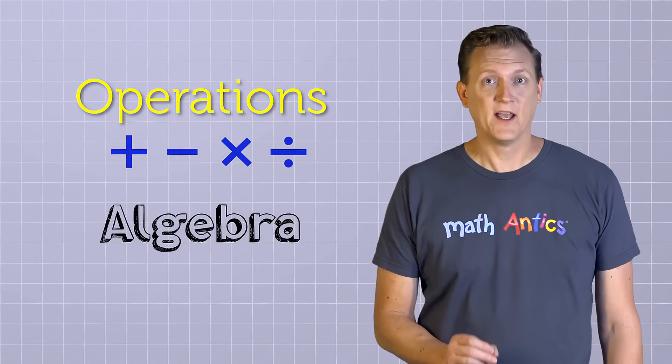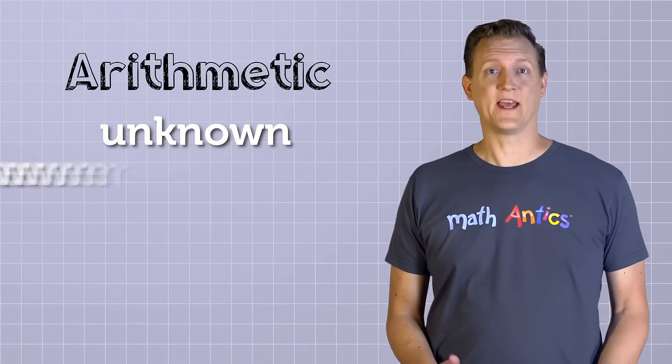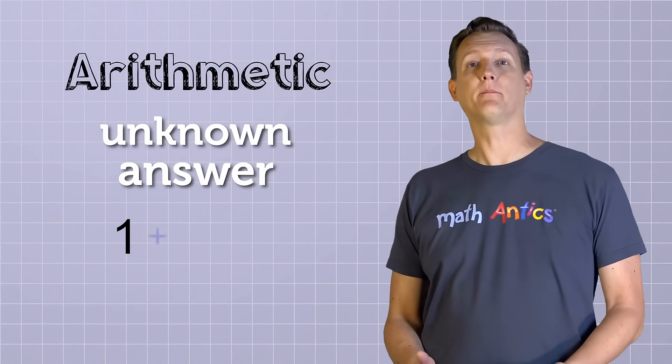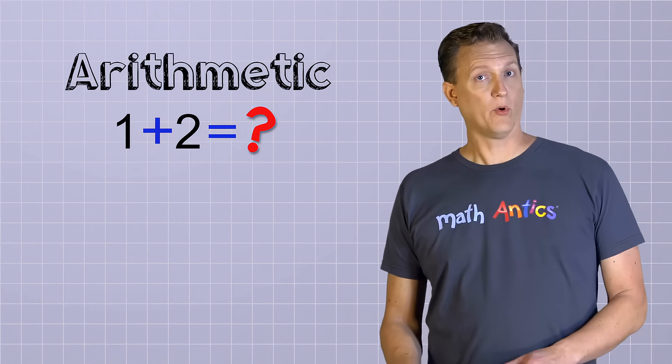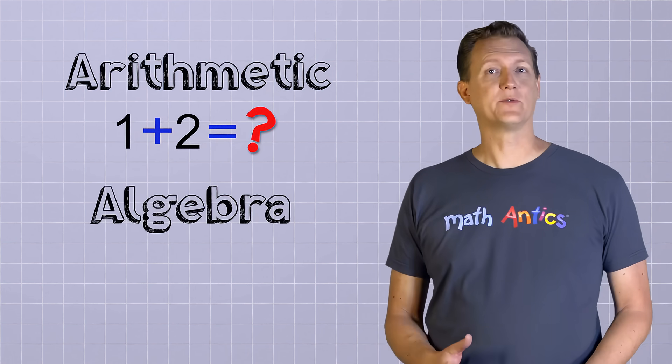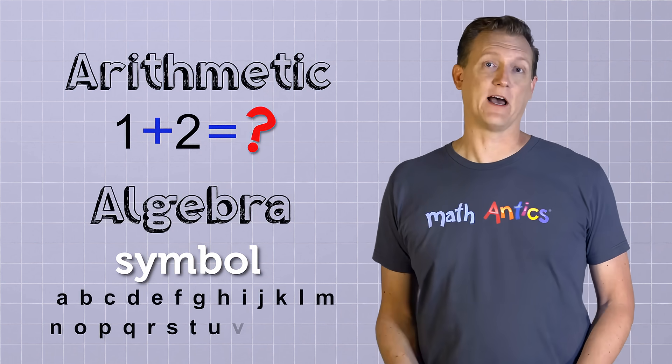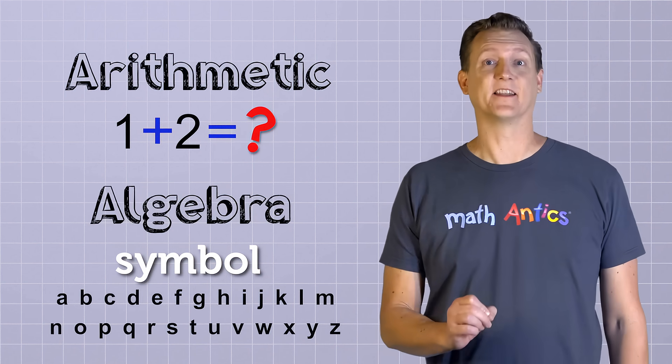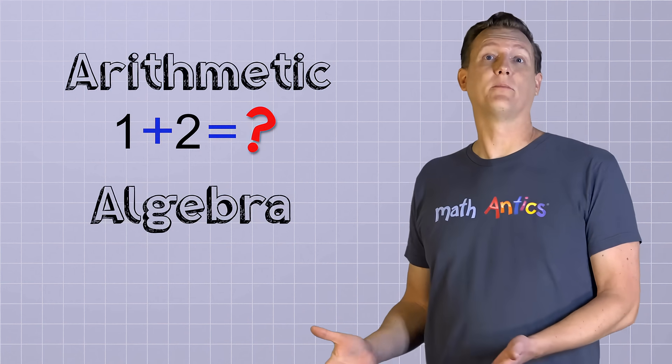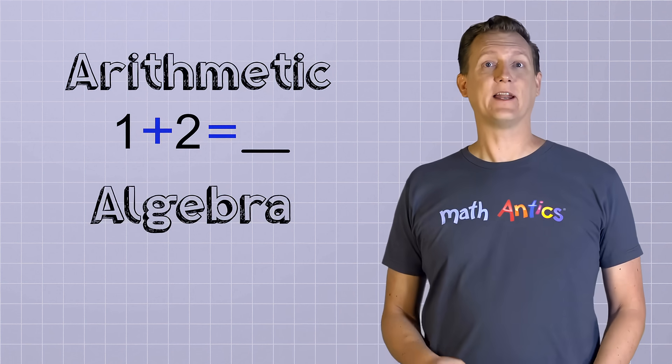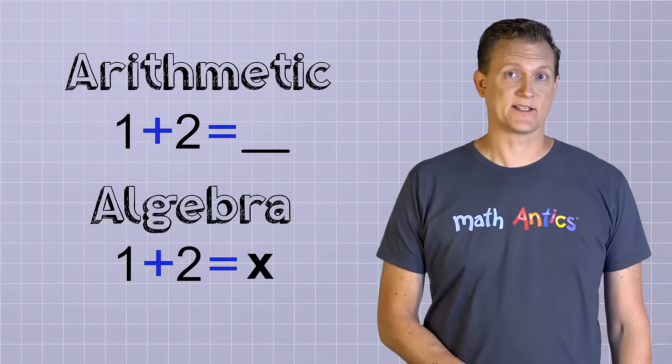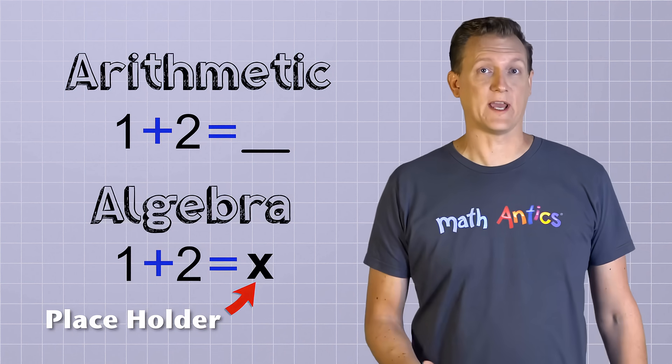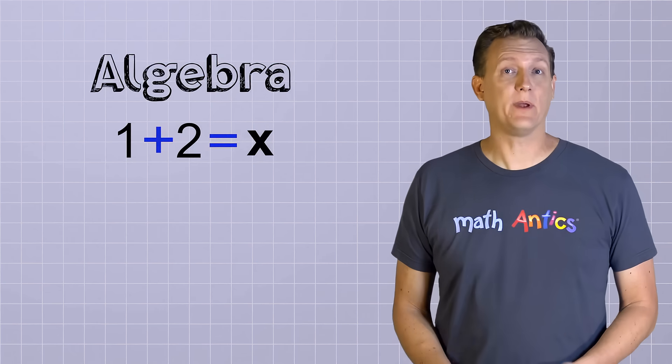But algebra introduces a new element, the element of the unknown. When you were learning arithmetic, the only thing that was ever unknown was the answer to the problem. For example, you might have the problem 1 plus 2 equals what? The answer isn't known until you go ahead and do the arithmetic. Now, the important thing about algebra is that when we don't know what a number is yet, we use a symbol in its place. That symbol is usually just any letter of the alphabet. A really popular letter to choose is the letter x.